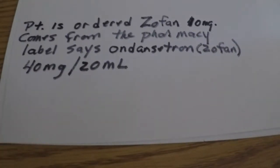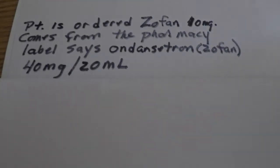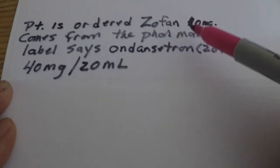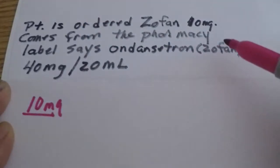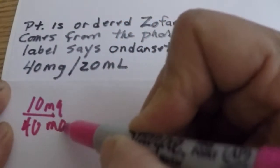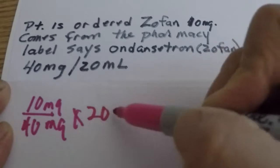The physician has ordered Zofran, or Ondansetron, 10 milligrams. It comes from the pharmacy — the label says Ondansetron 40 milligrams per 20 ml. Desired over have times quantity. The doctor has ordered Zofran 10 milligrams, so our desired dose is 10 milligrams. The label says we have 40 milligrams per 20 ml.